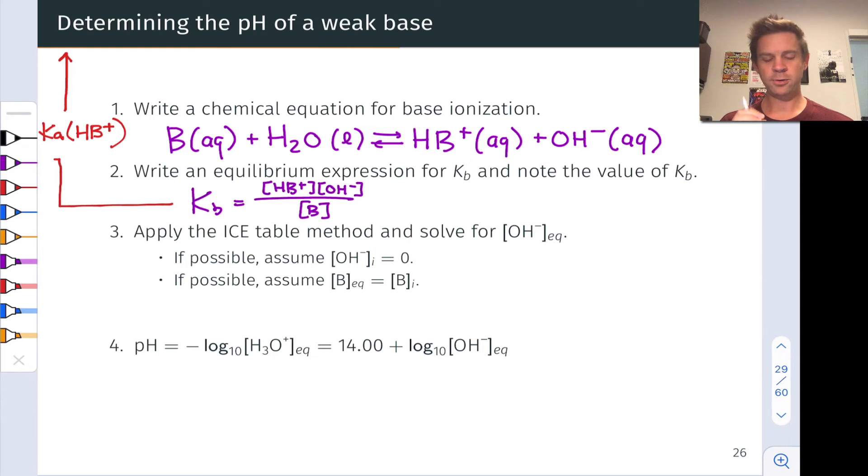One point to note here is that from a given Kb value, we can calculate Ka for the conjugate base using the conjugate seesaw, and vice versa.